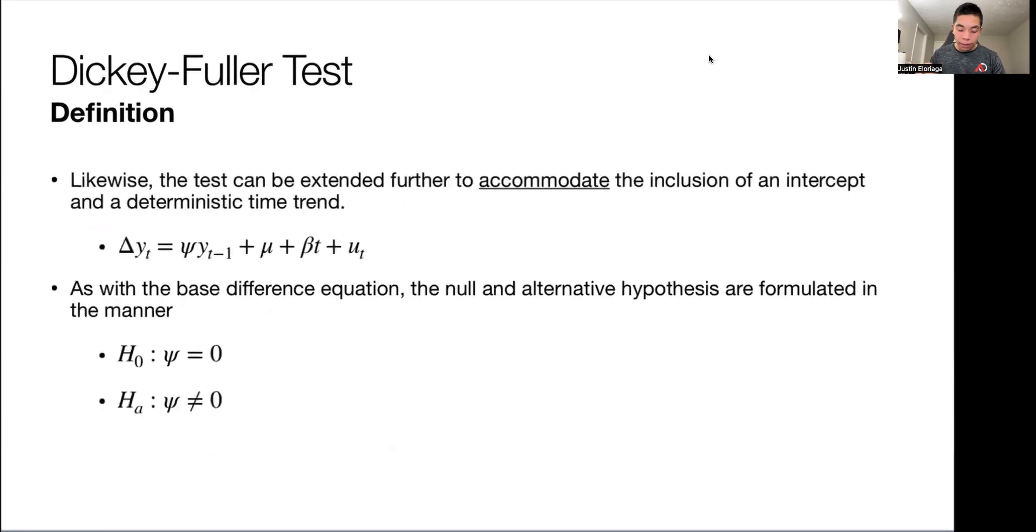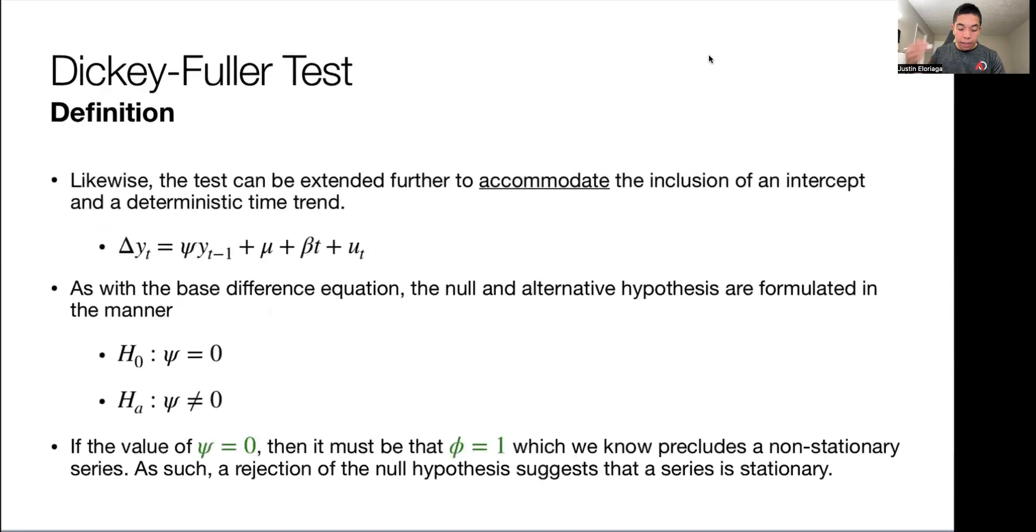And what we have here is if the value of this psi term is equal to 0, then it must be that phi is equal to 1, which we know precludes but sort of suggests a non-stationary series. That is, the series is non-stationary, because that phi being equal to 1 indicates a unit root, and that will suggest a non-stationary series.